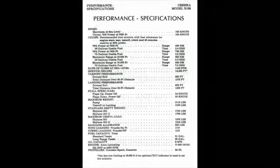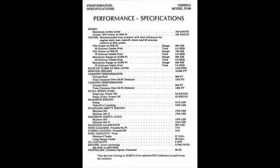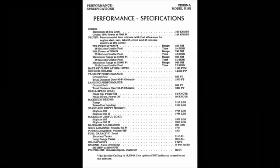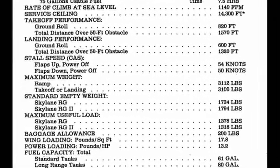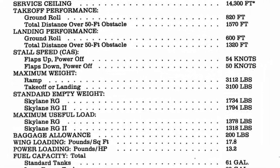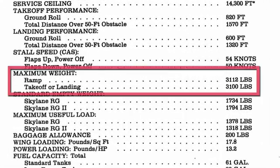One of the first few pages in the POH will give us the performance specifications. We're going to find out what the maximum takeoff weight is for the Cessna 182RG. The maximum ramp weight is 3,112 pounds and the maximum takeoff or landing weight is 3,100 pounds.